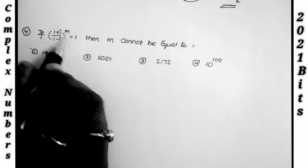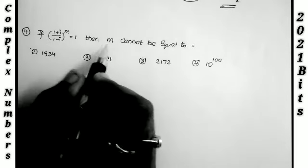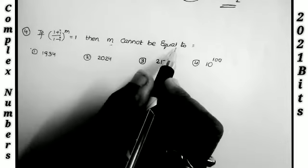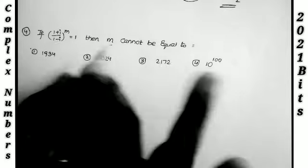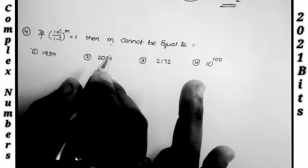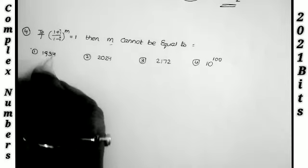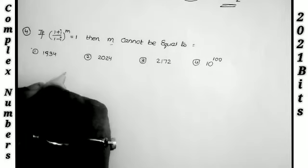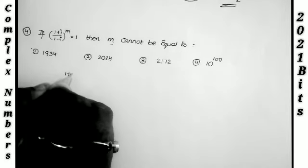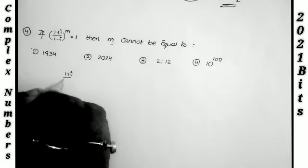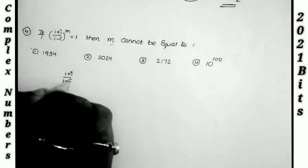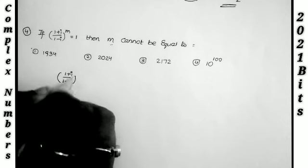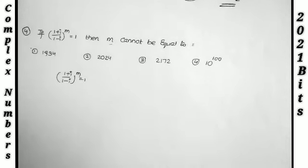Next question: if ((1 + i)/(1 − i))^m = 1, then m cannot be equal to what value? First I simplify (1 + i)/(1 − i) by multiplying numerator and denominator by (1 + i).